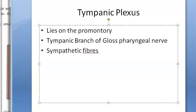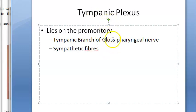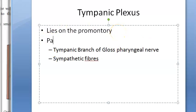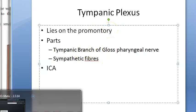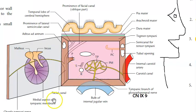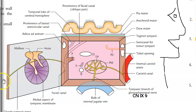So to summarize the formation: the tympanic plexus lies on the promontory, it has the tympanic branch of the glossopharyngeal nerve and sympathetic fibers forming the plexus around the internal carotid artery. The tympanic plexus supplies innervation to the medial surface of the tympanic membrane. Looking at the diagram, you are viewing the medial surface because the lateral wall has been opened, and the tympanic plexus supplies the medial wall of the tympanic membrane.